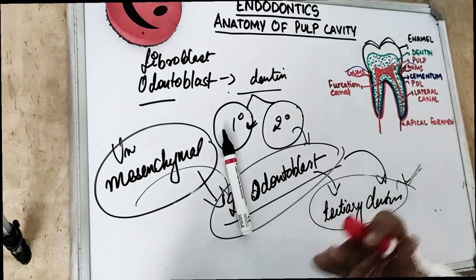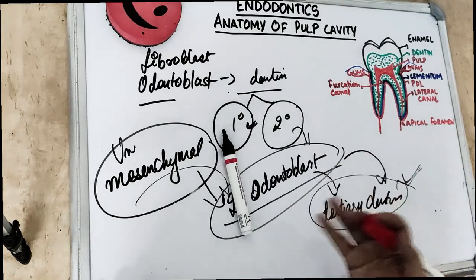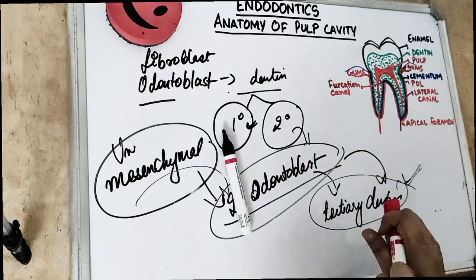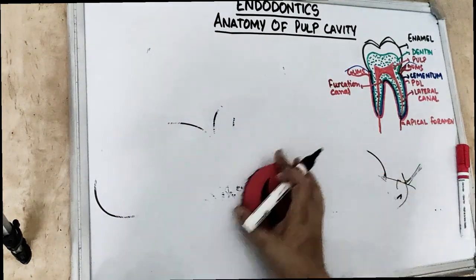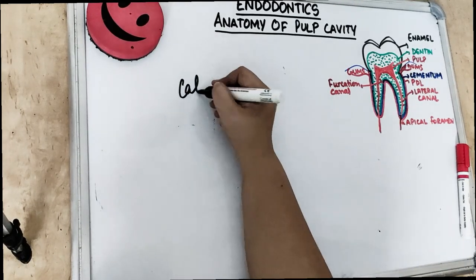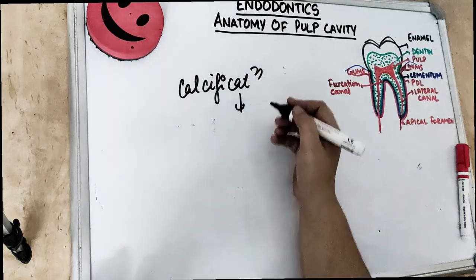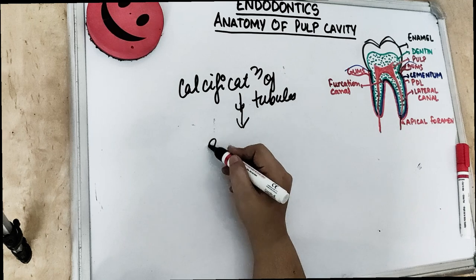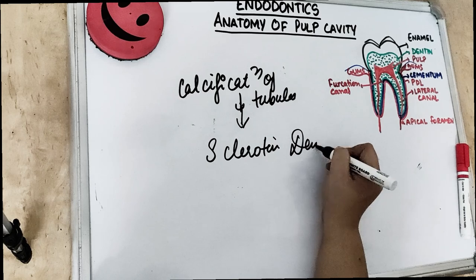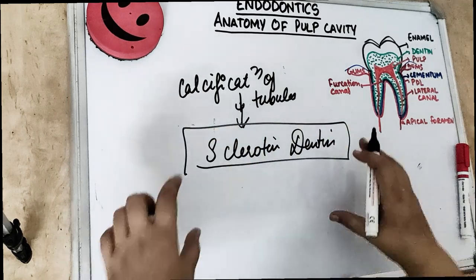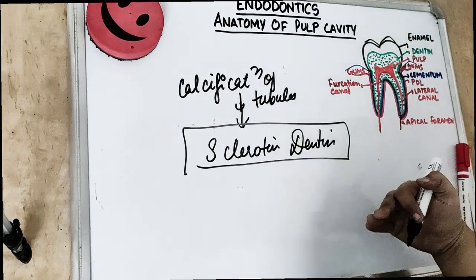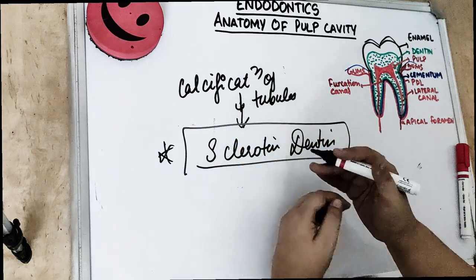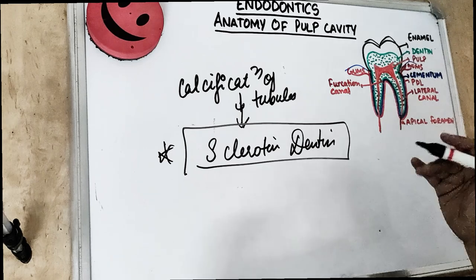So how does the pulp defend itself? In case of slow-progressing caries or aging, there is calcification happening at the dentinal tubules due to the pulpal response. This calcification of the dentinal tubules is known as sclerotic dentine. This hard dentine is not letting infection invade the pulp — it is protecting the pulp from slow-progressing caries.